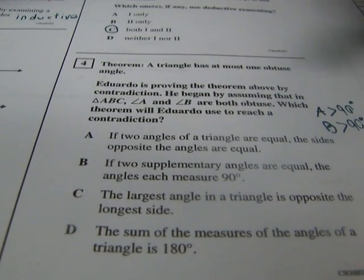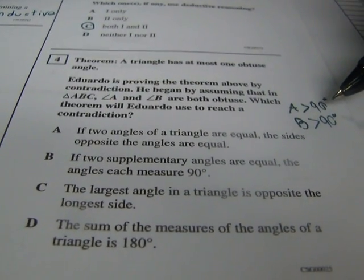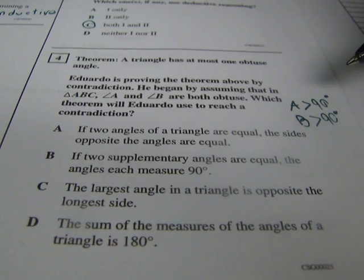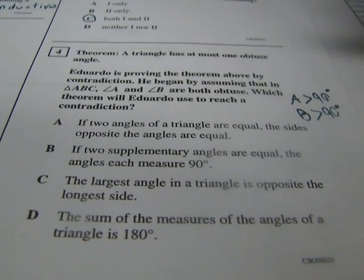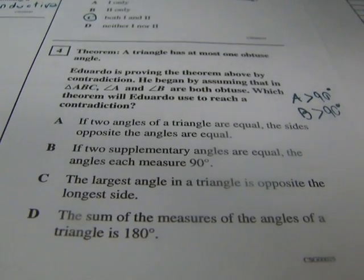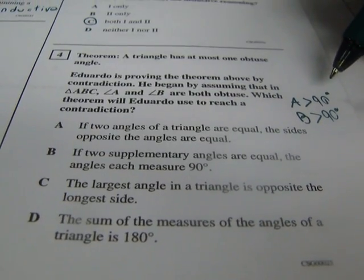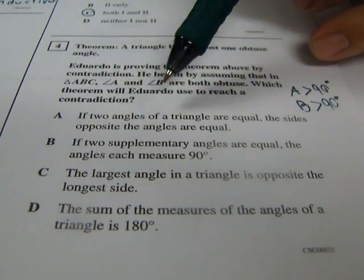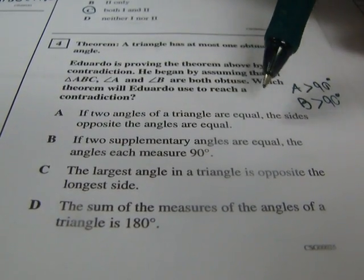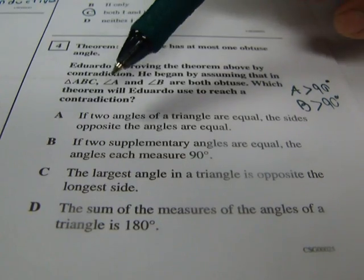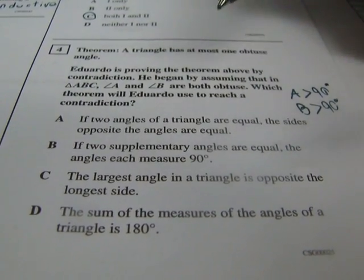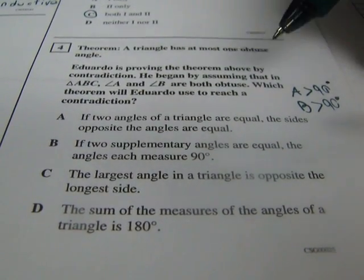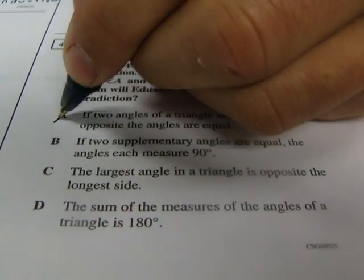So basically, if they're both more than 90, just think about it for a second. If they're both more than 90, then that would add up to more than 180. But we know triangles add up to 180, so this could never happen. Okay, so let's look for something that goes along with that logic. If two angles of a triangle are equal, the sides opposite the angles are equal. Well, that's not related. It didn't say A and B are equal, just says that they're more than 90, so that is definitely not the answer.